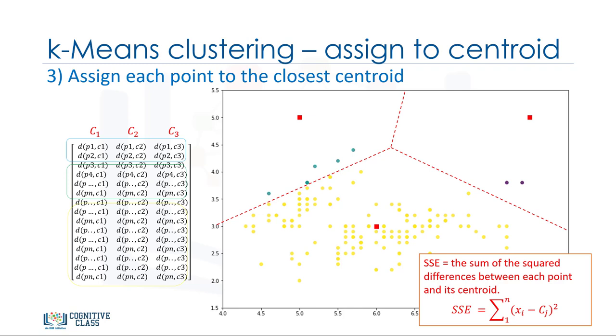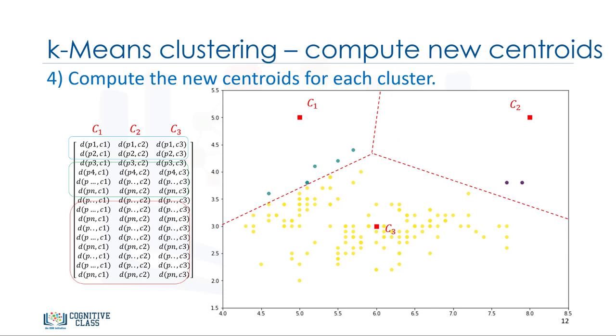Here, error is the total distance of each point from its centroid. It can be shown as within cluster sum of squares error. Intuitively, we try to reduce this error. It means we should shape clusters in such a way that the total distance of all members of a cluster from its centroid be minimized. Now, the question is, how can we turn it into better clusters, with less error? Okay, we move centroids.